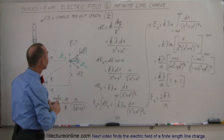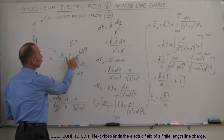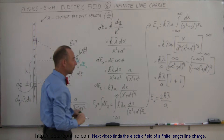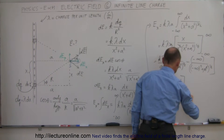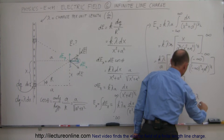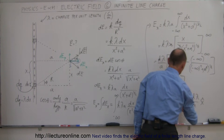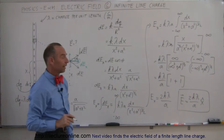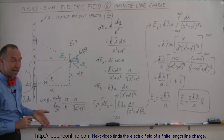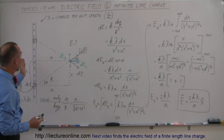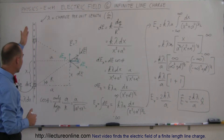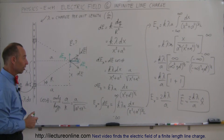That's the magnitude, and since the point is to the right, we can write it in vector form as E equals 2K lambda divided by A in the positive X direction. So the answer is fairly straightforward: it's simply twice the constant K times the linear charge density divided by the distance away from that line. And that's how you find the electric field of an infinite line of charge.